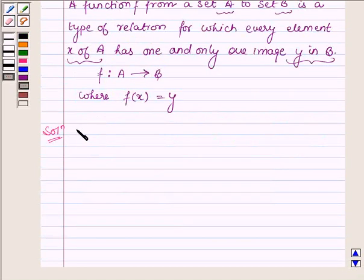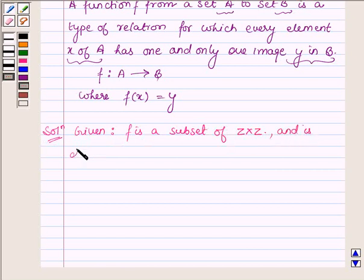Now here we are given that f is a subset of Z cross Z which is defined by the set of ordered pairs (ab,